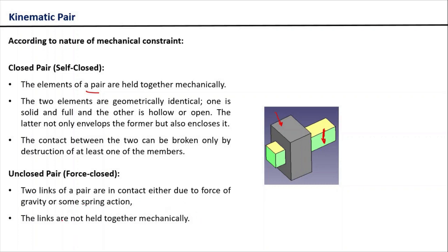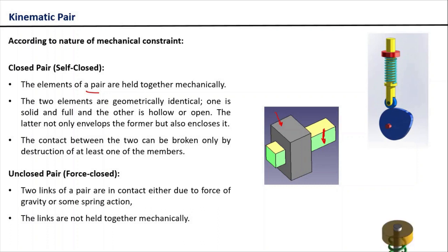One example of a force unclosed pair is the cam and follower arrangement. You can see here, this blue portion is basically representing your cam. You can consider this as link one, and this portion along with this roller can be considered as link two.